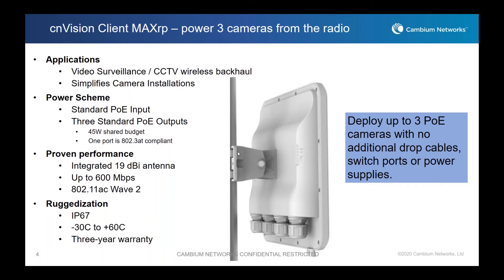This has the same performance as the Max R — it has an integrated 19 dBi antenna and up to 600 megabits per second. Everything else about it is the same as a Max R radio — it's got IP67 rating and a three-year warranty. The key addition is three POE output ports. This is one of the things SIs have asked us about most since we started with CNVision — it would really be nice to be able to hang a camera directly off of the radio. Now this is available.